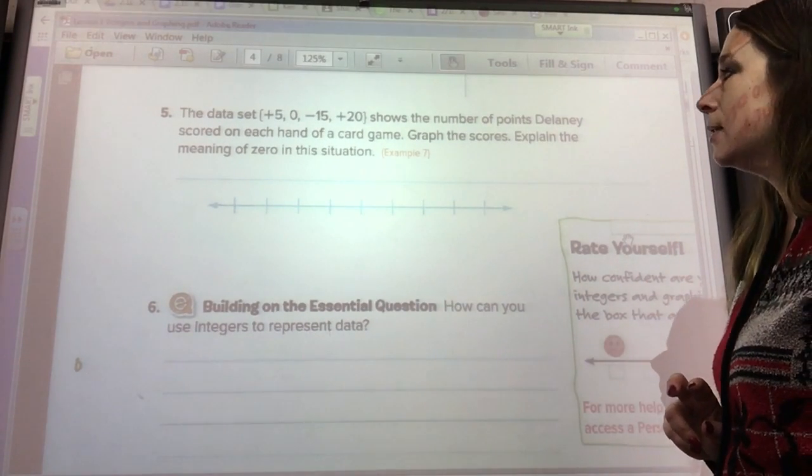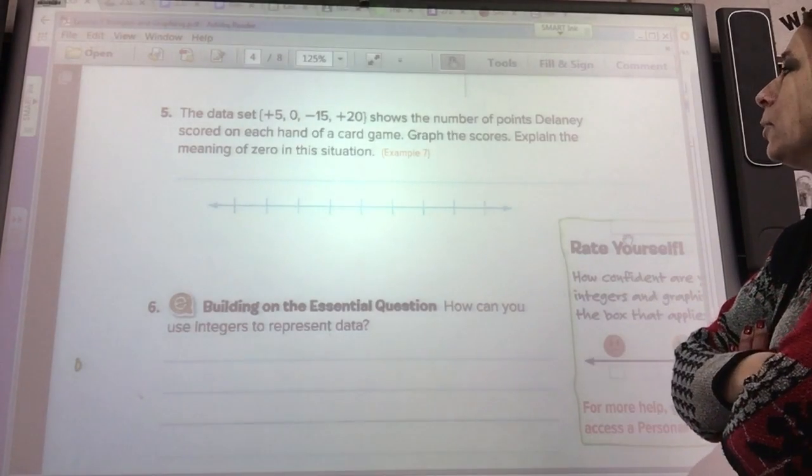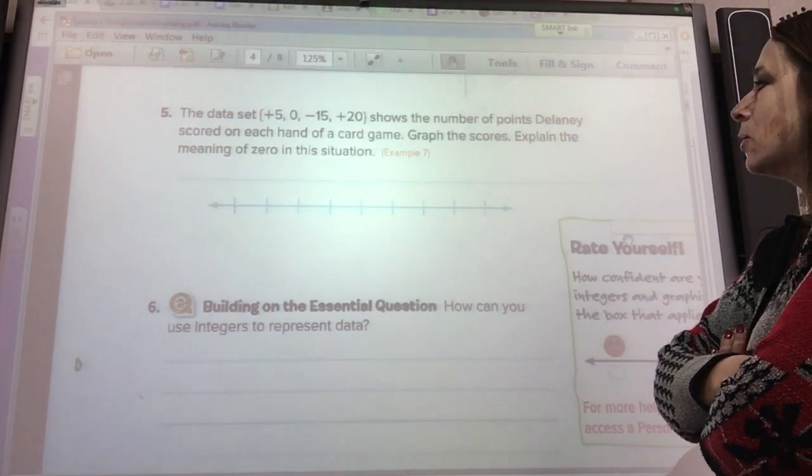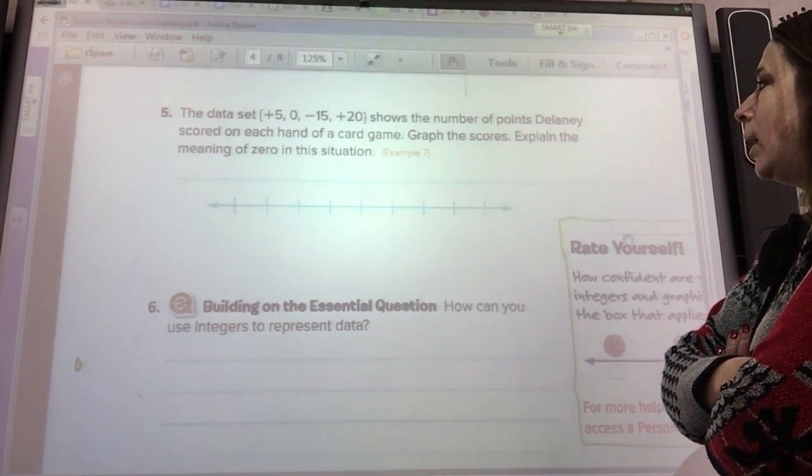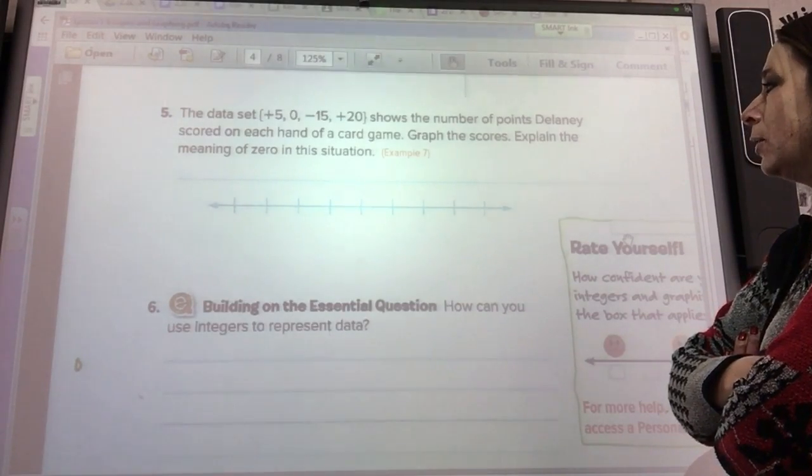The data set positive five, zero, negative fifteen, plus twenty shows the number of points Delaney scored on each hand of a card game. Graph the scores. Explain the meaning of zero in each situation.